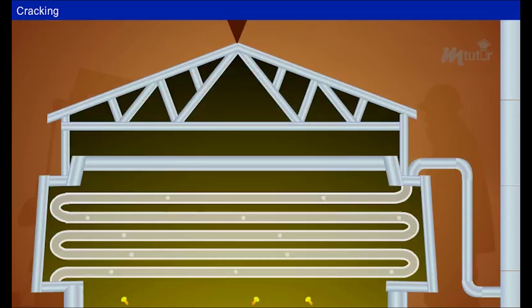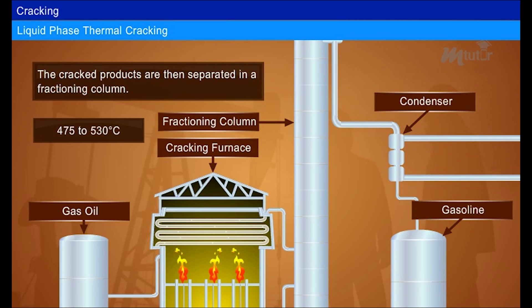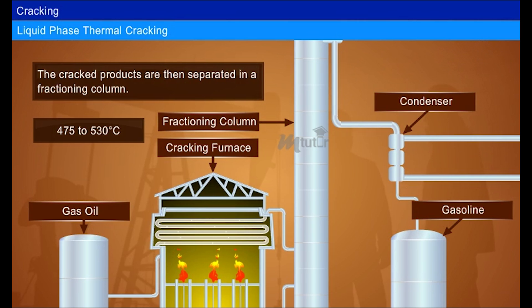Liquid phase thermal cracking: the heavy oil is cracked at a temperature of 475 to 530 degrees Celsius and a pressure of about 100 kilograms per square centimeter. The cracked products are then separated in a fractioning column.